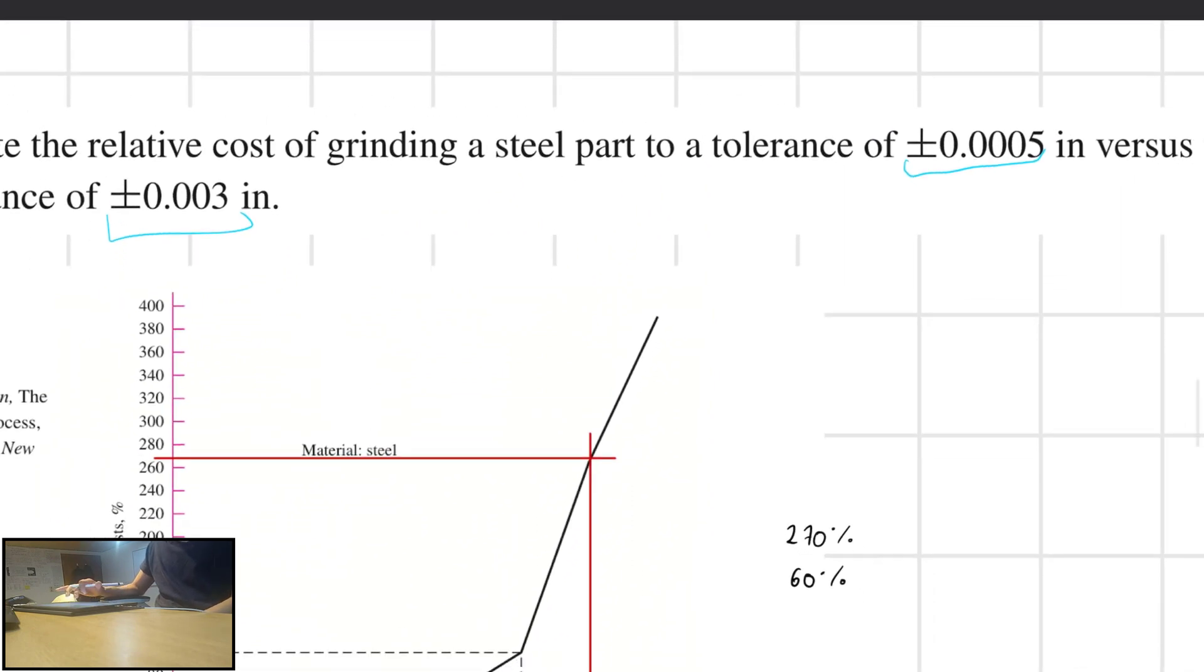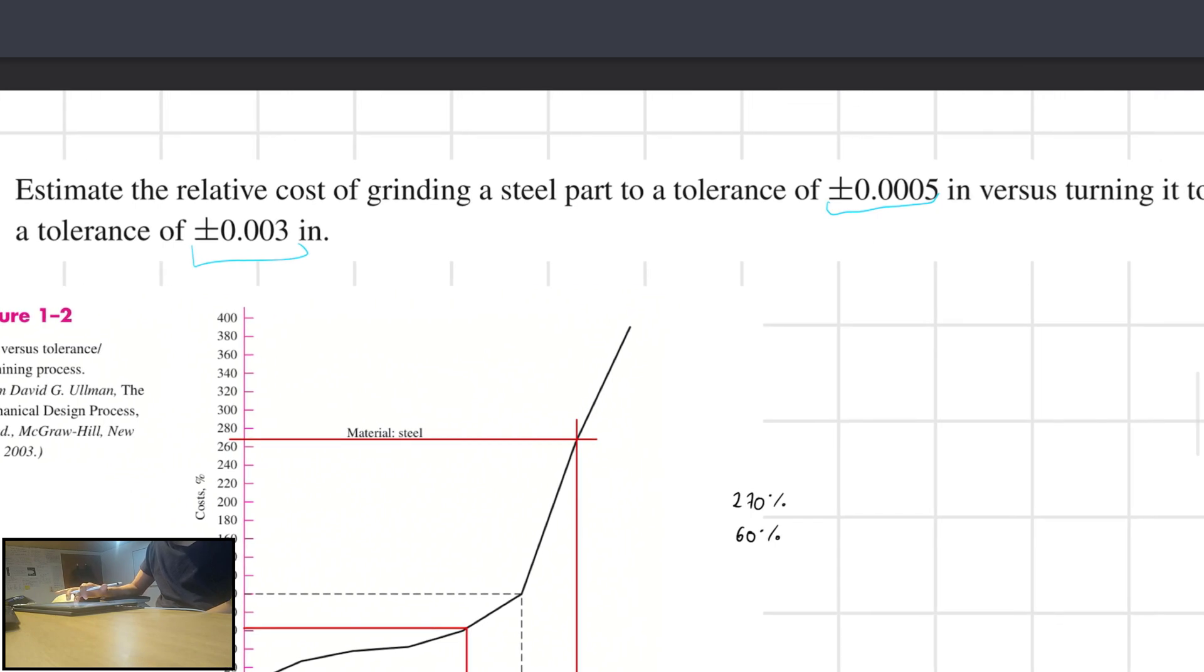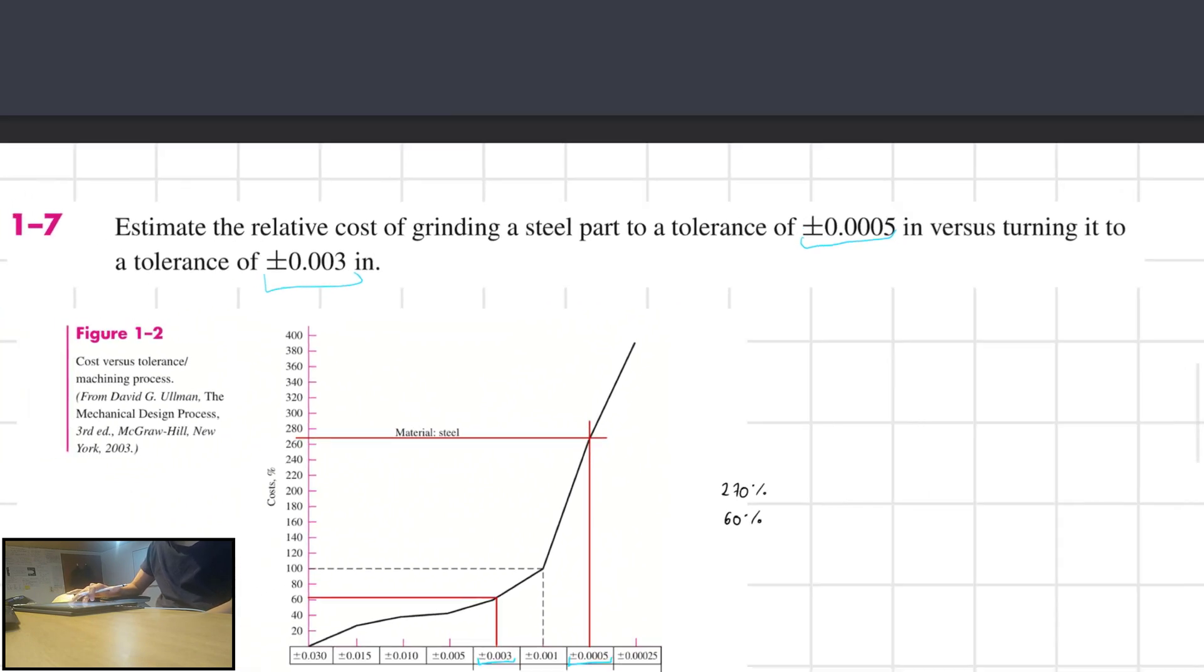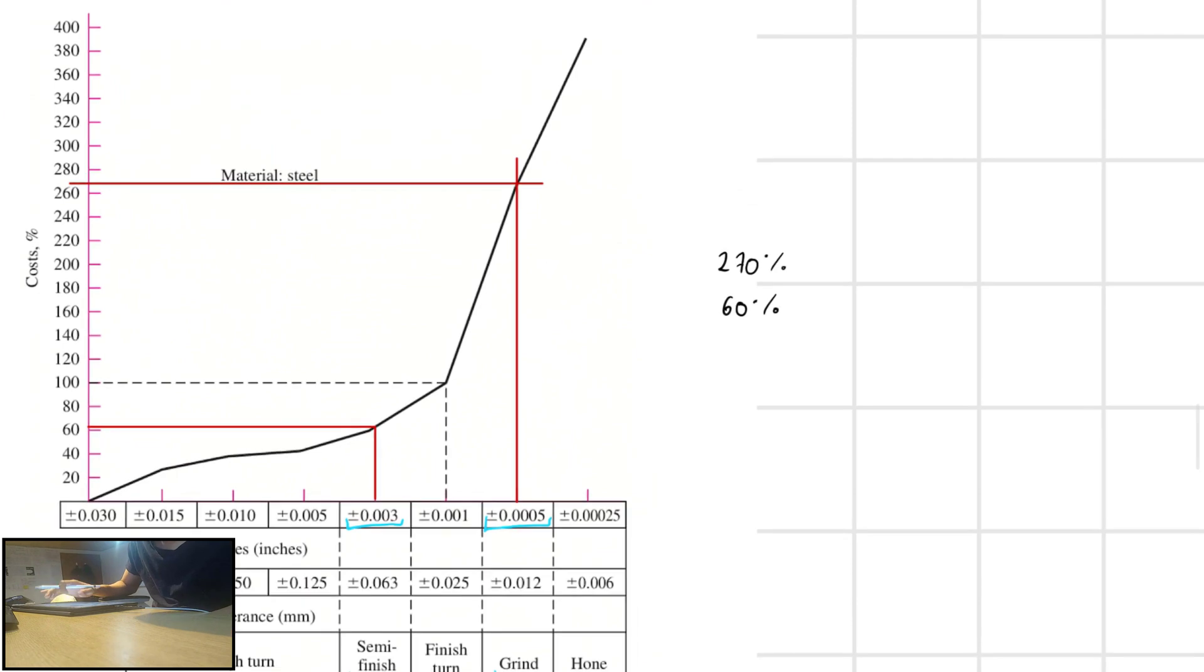So they are not giving me a specific cost. They are telling me estimated relative cost, right? So all we have to do is know how many times do I have to multiply 60 for me to get to 270.